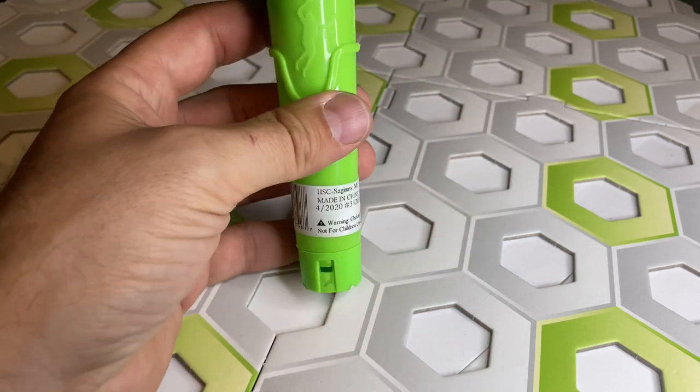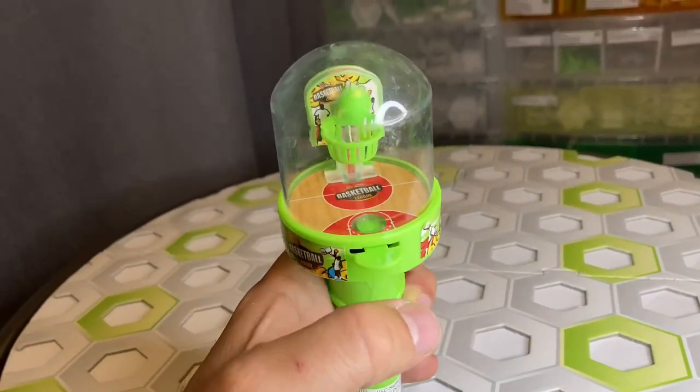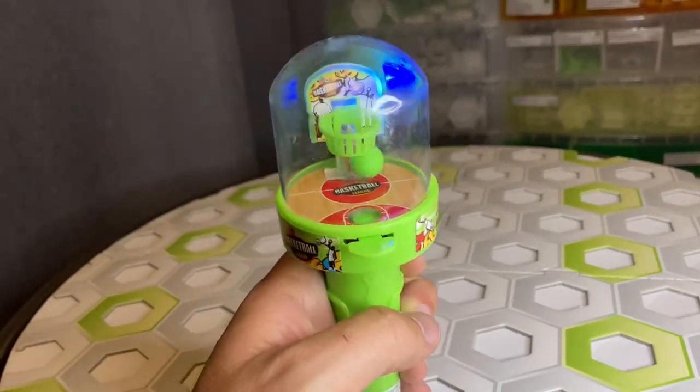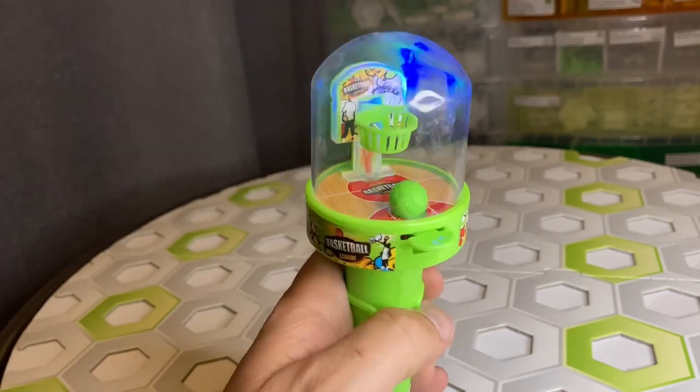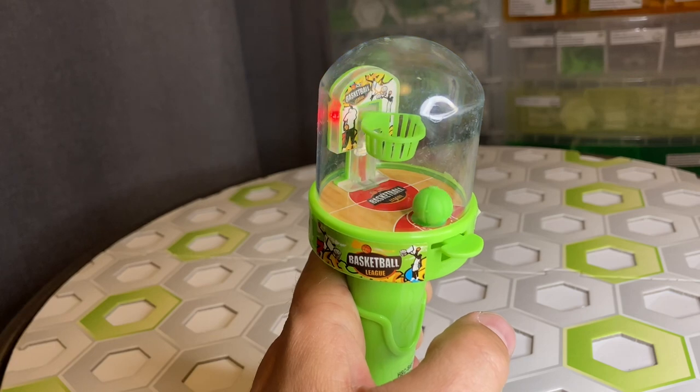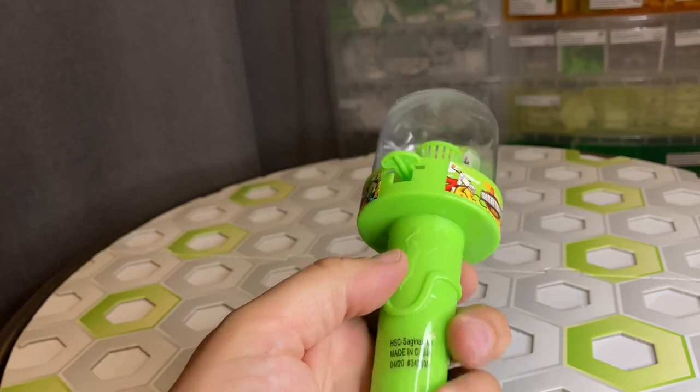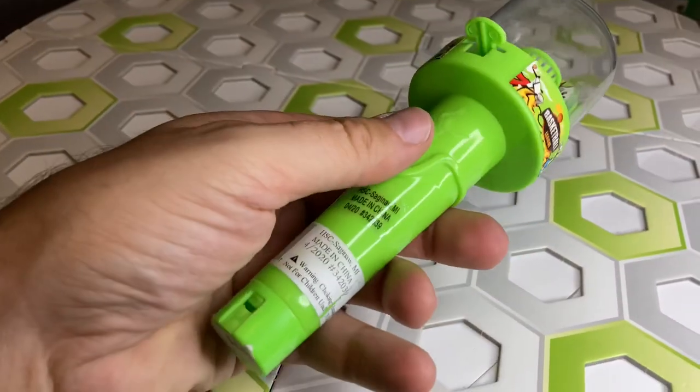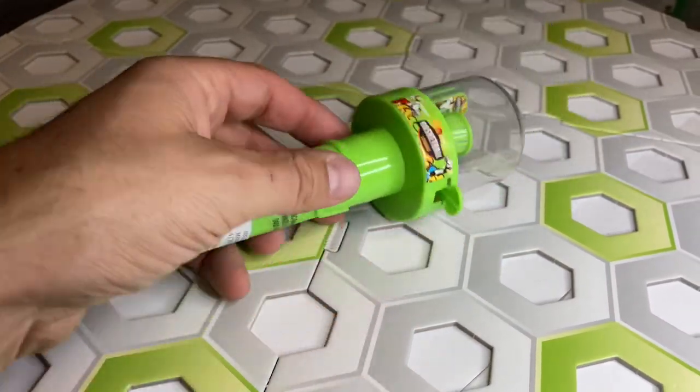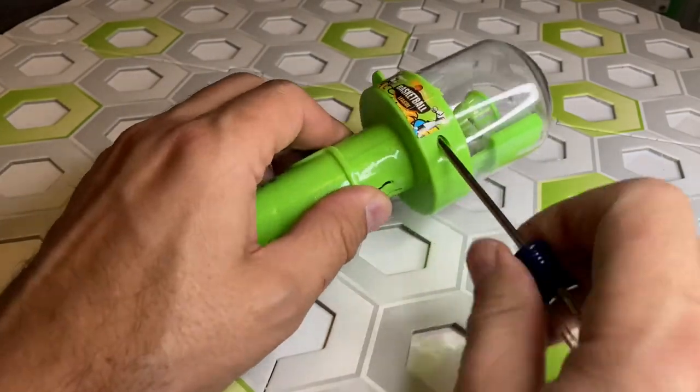Today I've got this five dollar basketball toy. Check this out. It's got lights, it's got sound. Pretty cool huh? So I was thinking maybe we could modify this to go into our GraviTrax run. So let's try disassembling this and see what we can do with it.